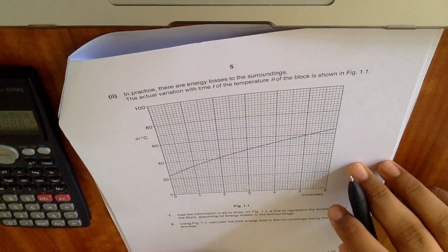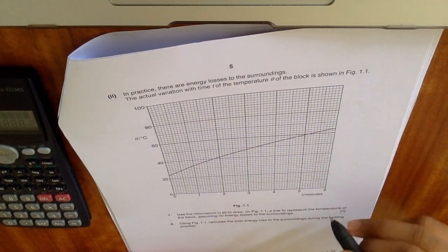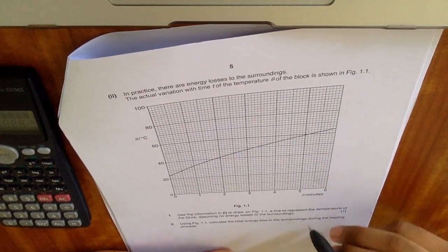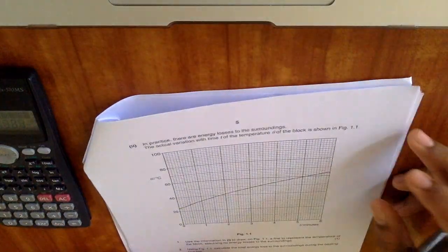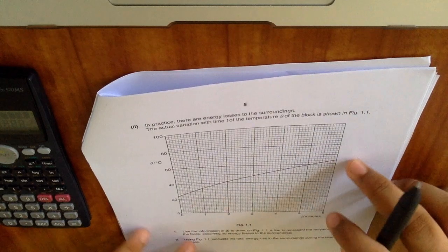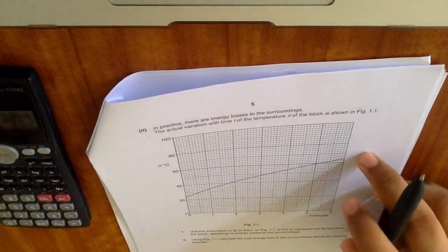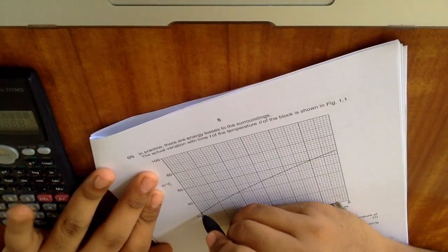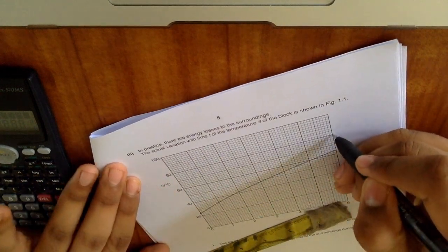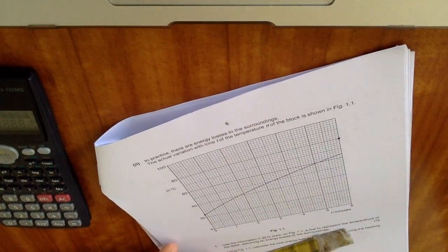Okay, so we need to draw a straight line, right? So assuming there are no energy losses, for this obviously I'd need a ruler. So it starts at 24 and is 80 degrees celsius six minutes later.